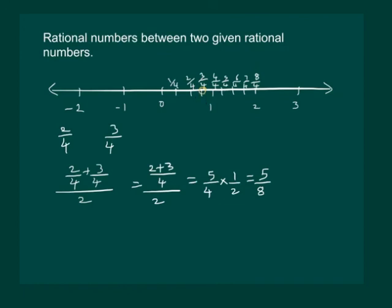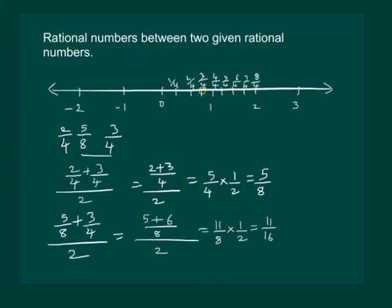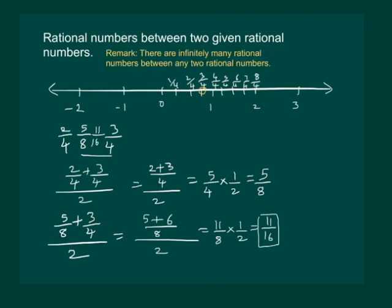We can find another rational number between 2 by 4 and 3 by 4 by following the same procedure with 5 by 8 and 3 by 4. Adding 5 by 8 plus 3 by 4 and dividing the sum by 2, we get 11 by 16, which also lies between 2 by 4 and 3 by 4. Hence we come to the remark that there are infinitely many rational numbers between any two rational numbers.